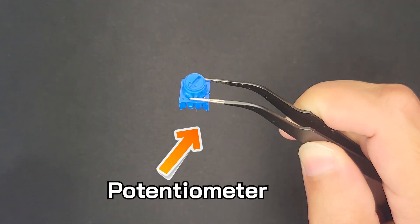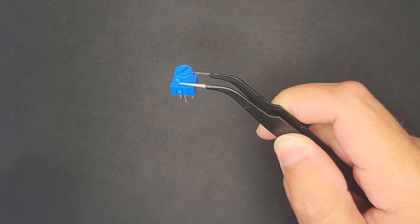This is a potentiometer. It has three pins. It's supposed to be used as a variable resistor.